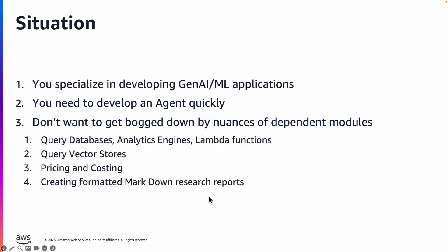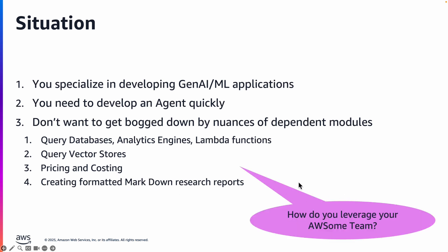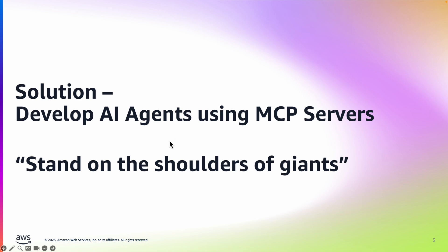Let's consider a situation where you specialize in developing Gen AI ML applications. You need to develop an agent very quickly, but you don't want to get bogged down by the nuances of dependent modules, such as how do I query databases, analytics engines, Lambda functions, query vector stores, pricing and costing, creating formatted markdown research reports. You have to leverage your awesome team — other team members who might have already built some services that you can integrate into your agent. So how do you do that? The solution is to develop AI agents using MCP servers.